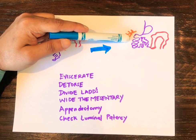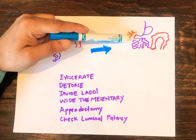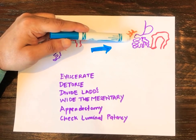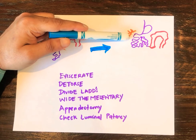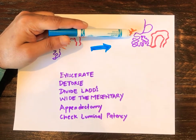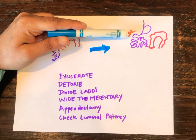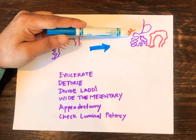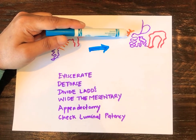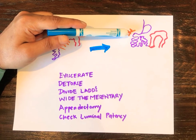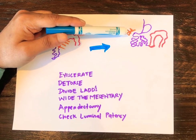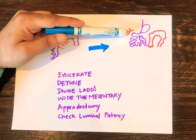Remember, the small bowel now stays in the right side of the abdomen, and the whole colon — including the right colon — is all in the left side of the abdomen. This is an important configuration to remember after surgery.